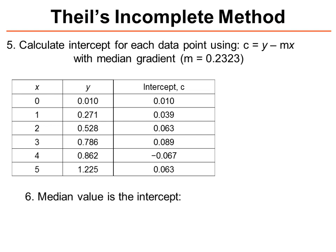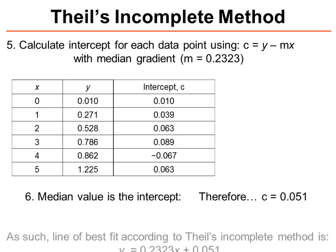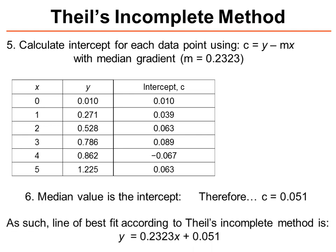The next step for Thiel's incomplete method is that the intercept is given by the median of these values, which in this case is 0.051. So overall, the line of best fit according to Thiel's method for this example is y equals 0.2323x plus 0.051.